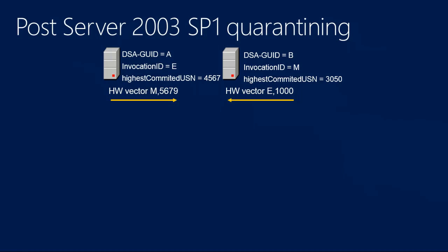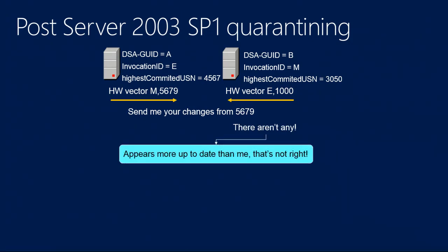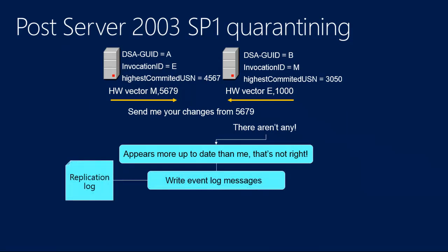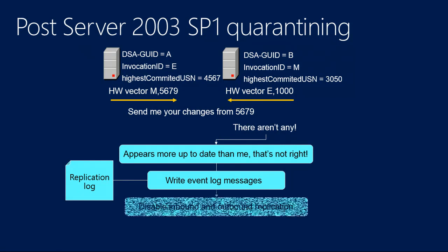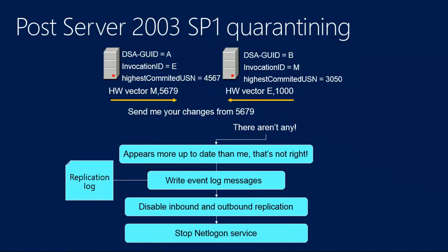Microsoft thought this was a bad idea, so in 2003 SP1 they brought in quarantining. When the DC says 'send me your changes from 5,679' and gets told 'there aren't any,' it says 'that's very weird — how can he be more up to date than I am?' So it logs an entry in the event log, disables its inbound and outbound replication, and shuts down the Net Logon service — so it's no longer a DC. But you could still end up with duplicate RIDs in your domain and all sorts of issues. We need a better solution.